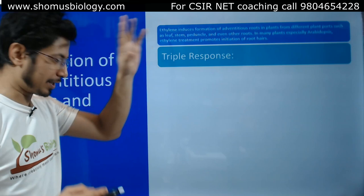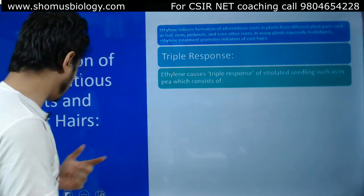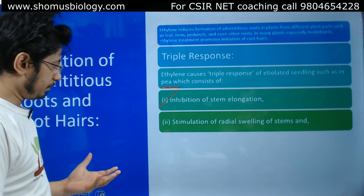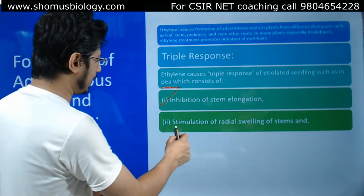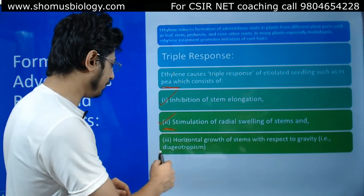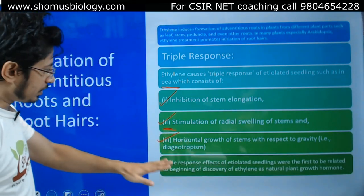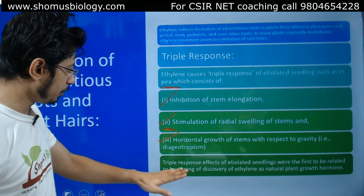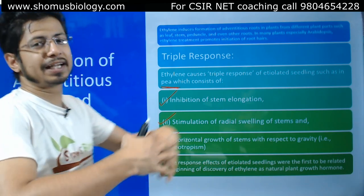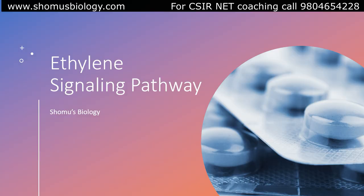Also remember the triple response: first, inhibition of stem elongation; second, stimulation of radial swelling of the stem; and third, horizontal growth of stems with respect to gravity — the plant grows at 90 degrees relative to gravity rather than against or toward it. The triple response in seedlings was among the first evidence linking ethylene as a natural plant hormone.